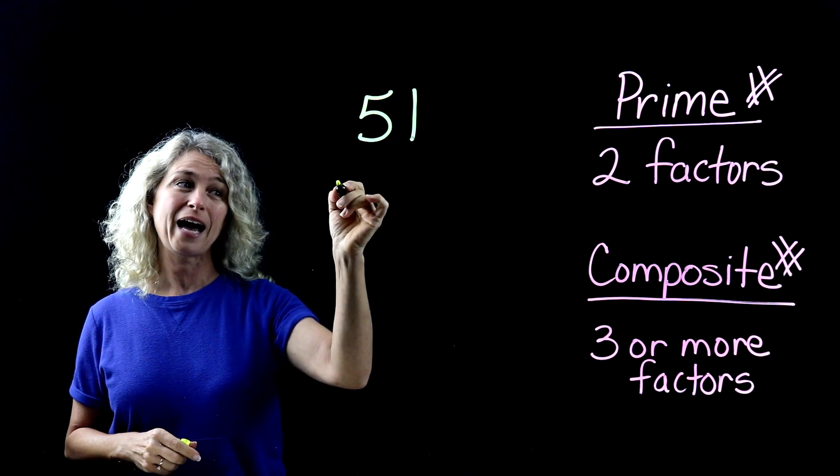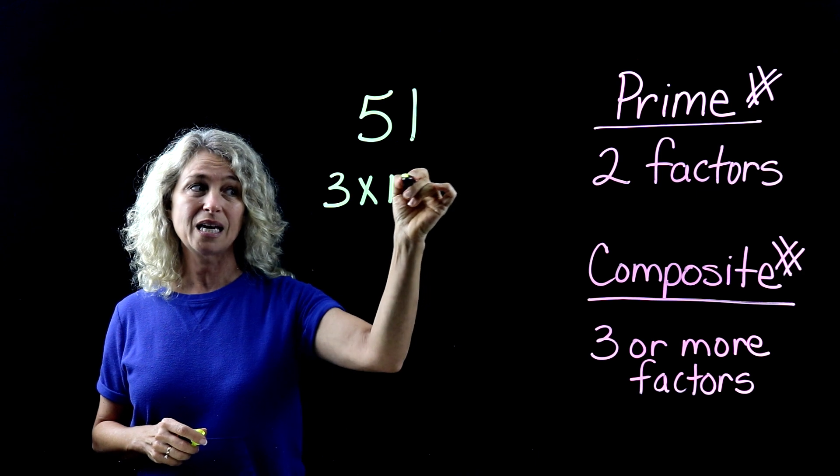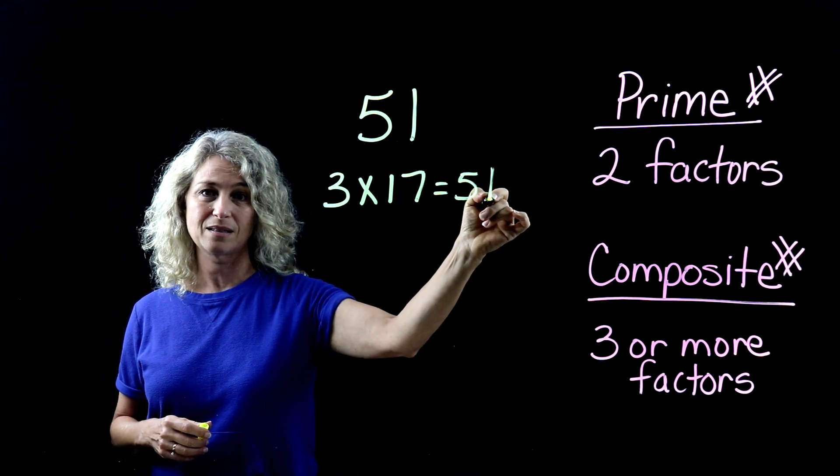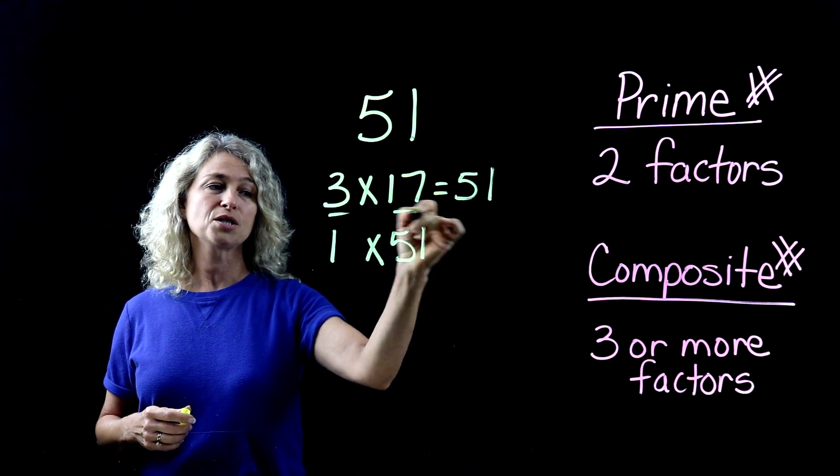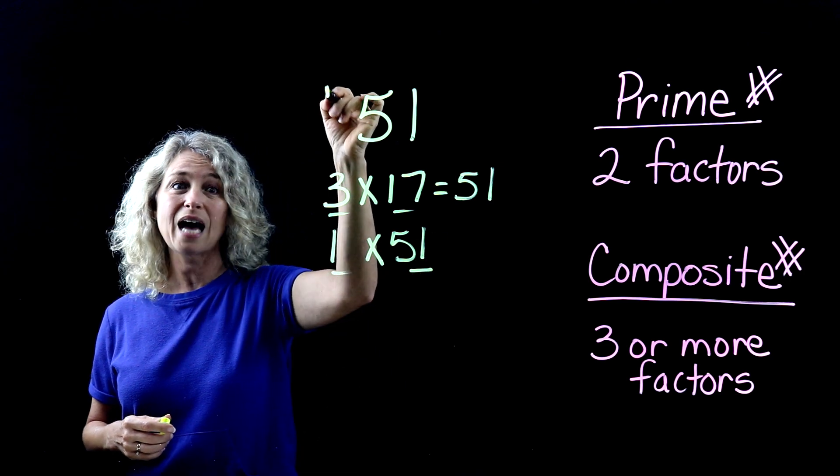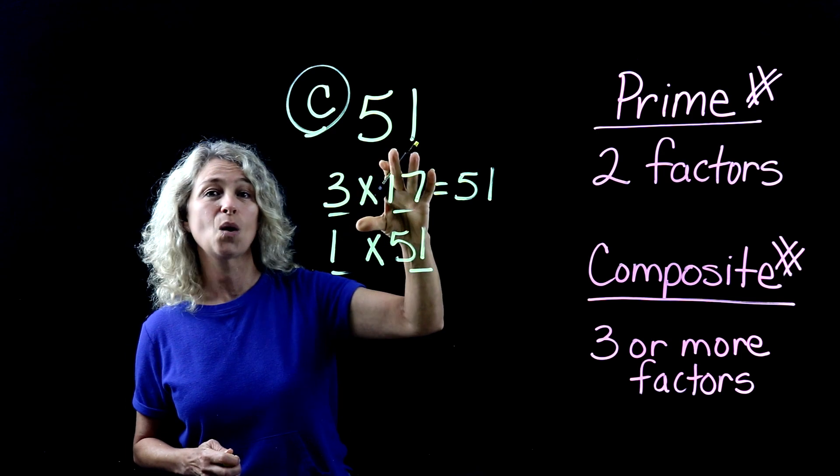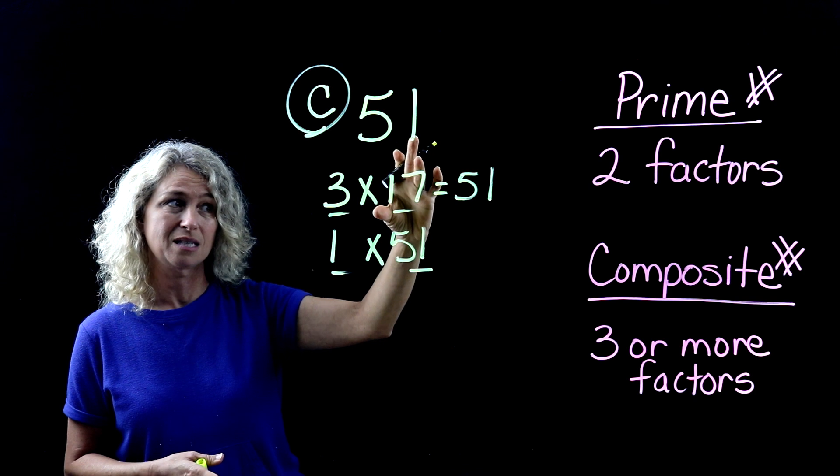Because in actuality, this one has the factors of 3 times 17. 3 times 17 is 51, in addition to 1 times 51. So 1, 2, 3, 4. So this is actually a composite number, even though you did not maybe recognize, because you might not know your 17s.